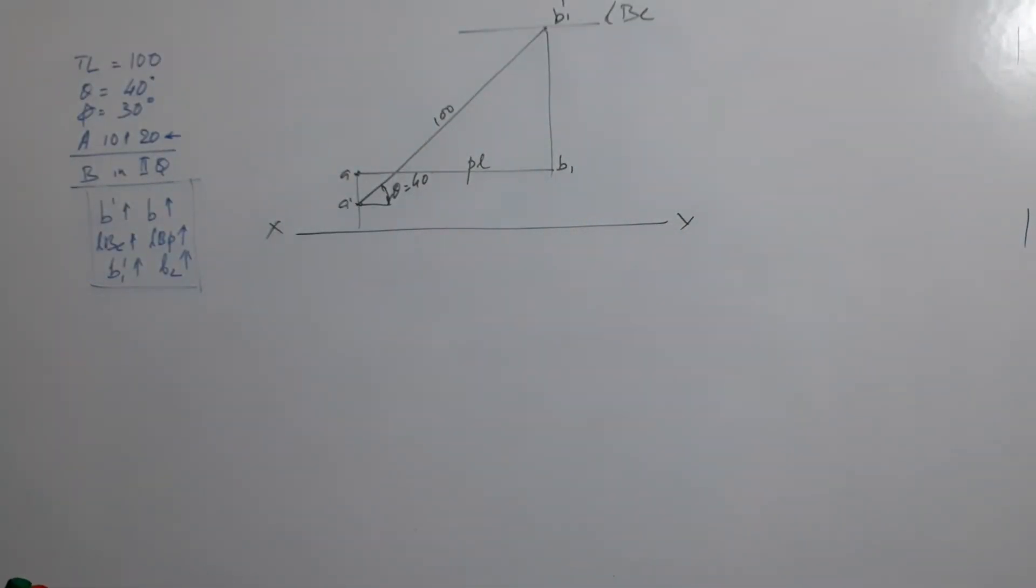Then what? Assume the line is parallel to HP. When you assume the line is parallel to HP, you have to draw upwards to get B2.